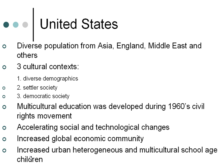The United States consists of ethnic and linguistically diverse populations from Asia, Africa, England, the Middle East, and many other nations, with a population over 300 million. The social fabric in the United States can be divided into three social-cultural contexts: diverse demographics, settler society, and a democratic society. That is also how schools are situated in the United States. With the 1960 civil rights movement, multicultural education was developed as an educational reform.